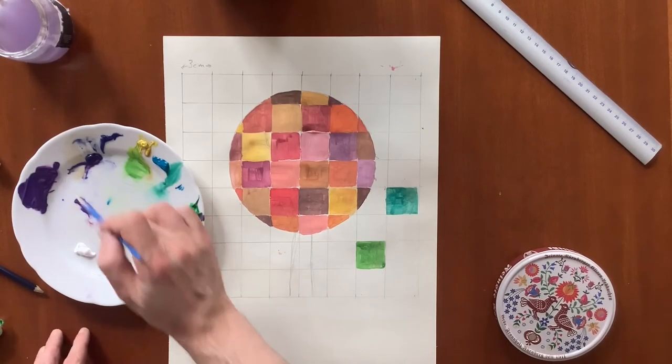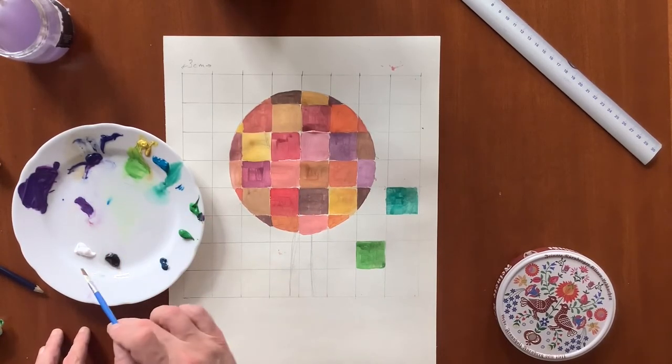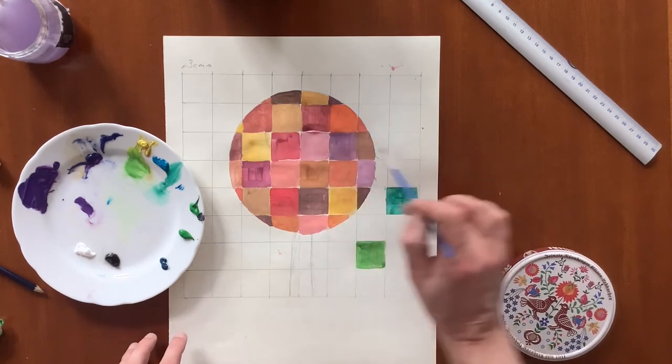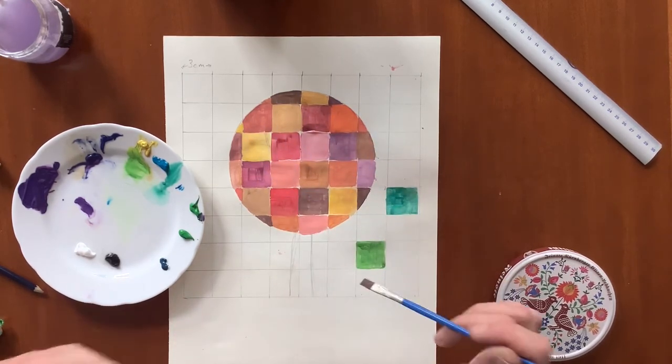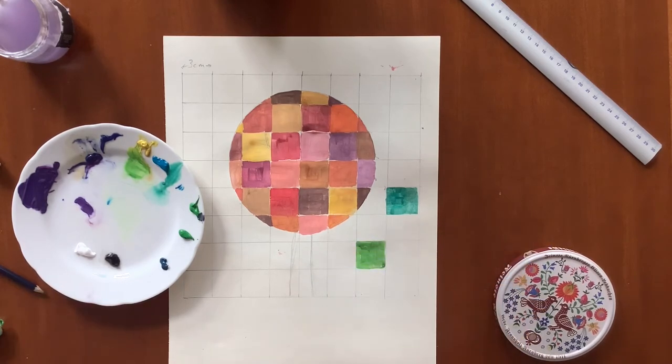Again, I'm also using white and black for tints and shades and I'm going to try to paint each square in a different color. We'll see how easy that is.